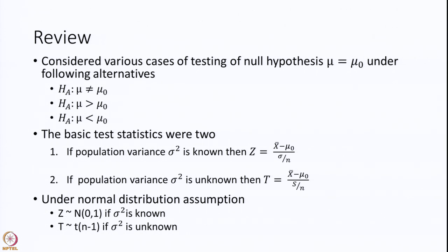Z is a normal variate with mean 0 and variance 1. In case we assume that sigma square is unknown, then it reduces to a test statistic which is a Student's t distribution statistic, distributed as Student's t distribution with n minus 1 degrees of freedom. The advantage of the two is that neither statistic's distribution under H0 depends on any other parameter than n, or in the case of Z, it does not even depend on the sample size.